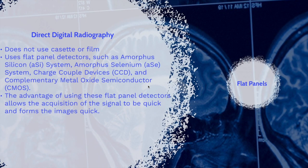Direct digital radiography does not use cassette or film. Instead, it uses flat panel detectors such as amorphous silicon system, amorphous selenium system, charge coupled devices, and complementary metal oxide semiconductor.